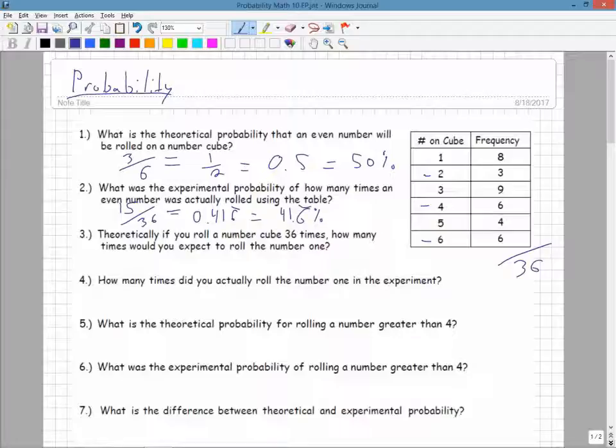Theoretically, if you roll the number cube 36 times, how many times would you expect to roll the number 1? Well, the number 1 occurs 1 out of 6 times. And if I rolled the die 36 times, I would multiply by 36 to see how many times I would get a 1. I can put 36 over 1. I get 1 times 36, which is 36, over 6 times 1, which is 6, which is equal to 6 times.